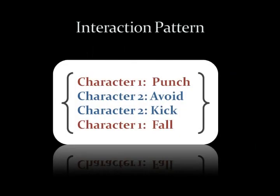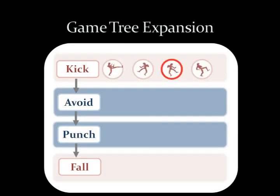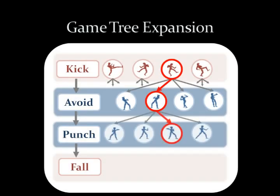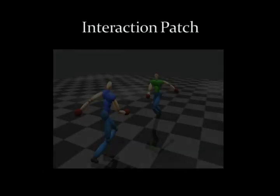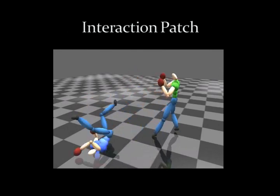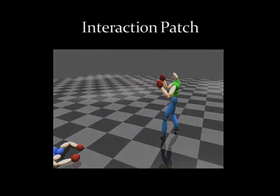During the offline process, the user first specifies the required pattern of interaction. Then the system automatically searches for a series of actions by expanding the game tree. The plausible series of actions are saved in the database as units called interaction patches.